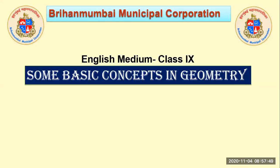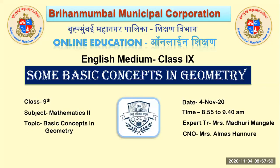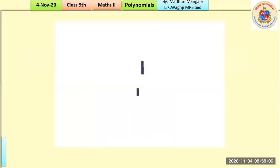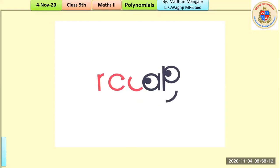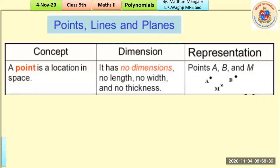Hello and welcome to today's class. We are looking at the chapter 'Some Basic Concepts in Geometry' from Mathematics Part Two. Let us begin with a recap of what we did in the last class. We started with the meaning of geometry, which means earth measuring, and how it helps in surveying, astronomy, navigation, and building.